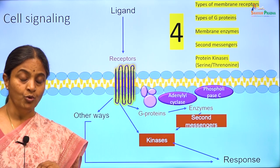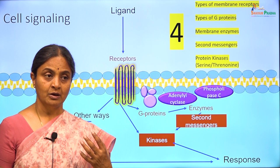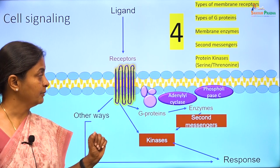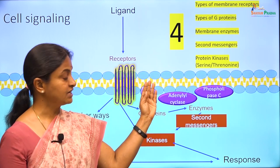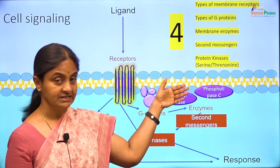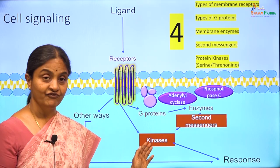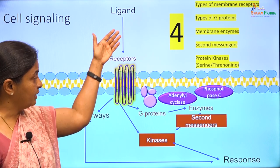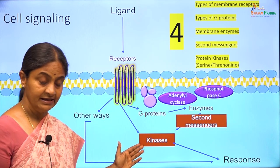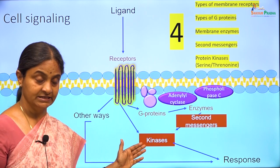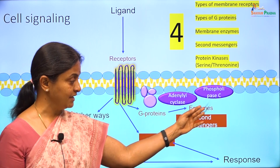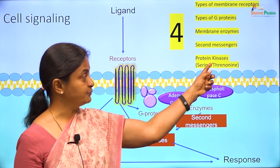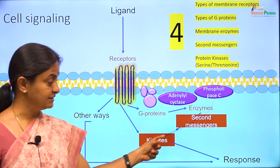We will now do the rule of 4 — declaring variables, stating what types of individual molecules there are. We will talk about 4 types of membrane receptors, 4 types of G proteins, 4 membrane enzymes, 4 second messengers, and 4 protein kinases. A general rule is that when the ligand-receptor combination activates a kinase directly, the kinase is usually a tyrosine kinase. But when it goes through a G protein coupled mechanism, the kinases activated are serine-threonine kinases.